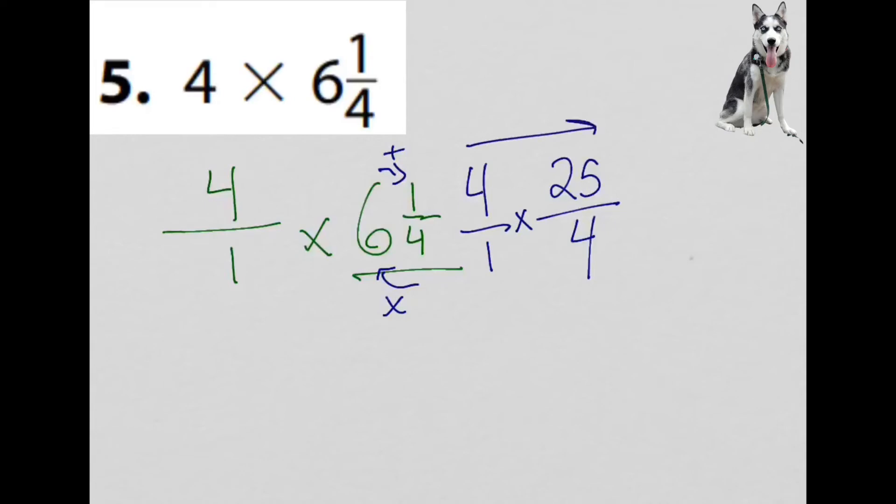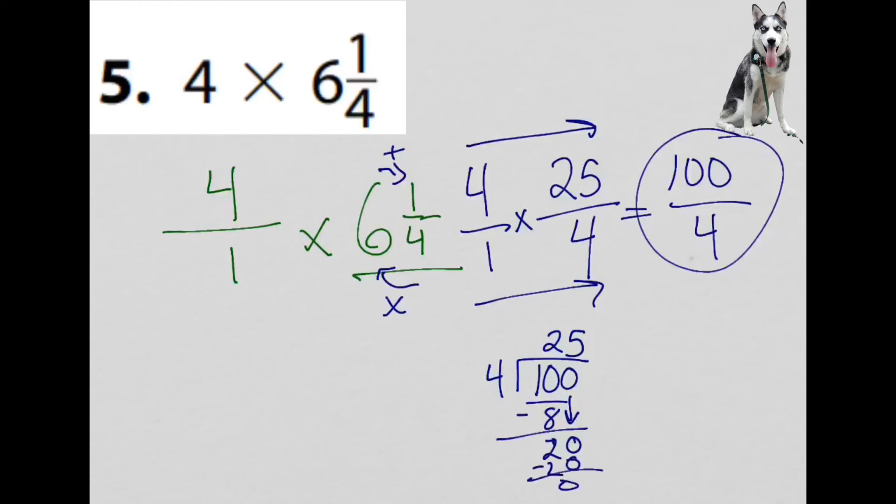Multiplication stays the same, so I go across the top multiplying the numerators. I go across the bottom multiplying the denominators. So 4 times 25 is 100. 1 times 4 is 4. Now I have to look, can I change this back into a mixed number? I can because it's a fraction greater than 1. So I do 100 divided by 4. 4 goes into 10 2 times. 2 times 4 is 8. So 10 minus 8 is 2. I have my 0 here. I have 20. So 4 goes into 20 5 times, and 5 times 4 is 20, and there's no remainder. So my final answer is going to be 25.